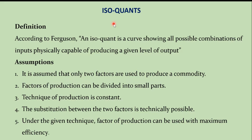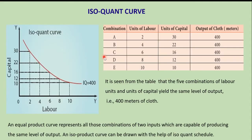An isoquant curve can be defined as the locus of points representing various combinations of two inputs — capital and labour — yielding the same amount of output. The isoquant curve is also called as equal product curve or product indifference curve. Ferguson has defined isoquant as a curve showing all possible combinations of inputs physically capable of producing a given level of output.